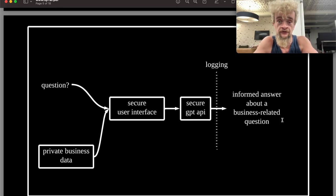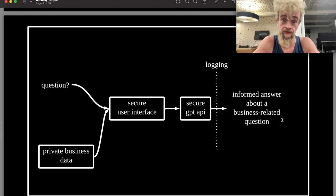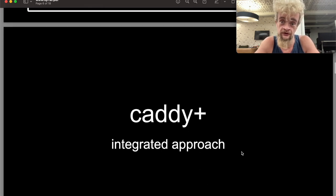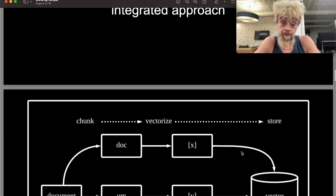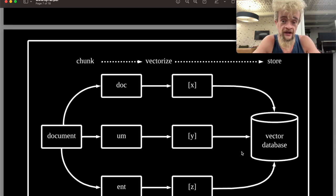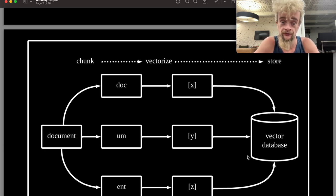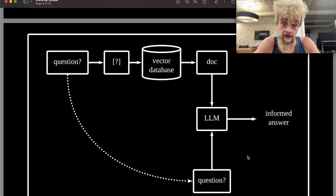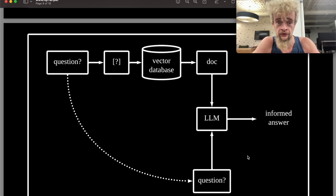Now, the API is responding, giving a chance before and after going to the user interface for logging. The final approach, which I'm calling the integrated approach in CATI Plus, takes a document that you have, chunks it down, does something called vectorize — which turns it into a number representation — then stores it, and does this repeatedly for all of the documents of your business. Once all of those documents are stored, you ask a question. The question is also turned into a vector, and that is used for querying the database for similar chunks.